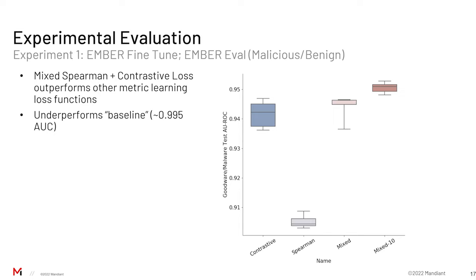For the first experiment, we fine-tune on the EMBER training partition and evaluate on the EMBER test partition under a malware detection regime — malicious versus benign labels. We see several combinations of metric learning losses and their performance. When contrastive performs best, a combination of contrastive and Spearman loss achieves substantially better performance. Unfortunately, we still underperform a baseline raw neural network fit on EMBER features directly.